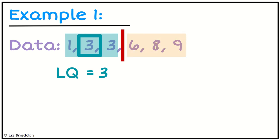Now I want to look at all the numbers that are above the median. And I want to find the middle of that set of numbers. And the middle of that set of numbers is 8. So my upper quartile is 8.